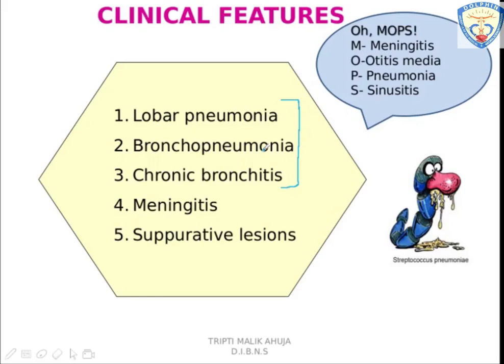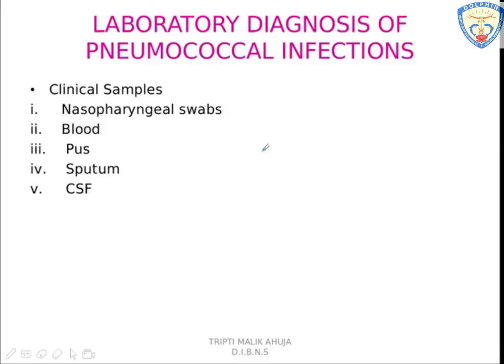Meningitis occurs when the bacteria crosses the blood-brain barrier. In secretive lesions, there is peritonitis, arthritis, appendicitis, and infections of soft tissues.